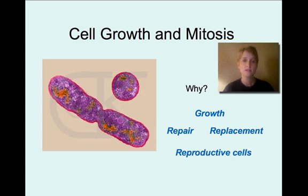And then there are reproductive cells. In order for reproduction to occur, we need cell division to make those reproductive cells.